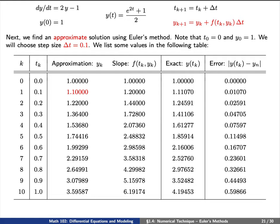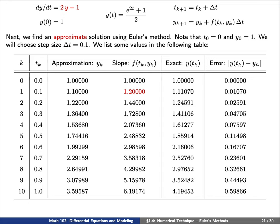While we've already computed f of t0, y0, this is what appears in the row above. And remember that our choice delta t equals 0.1.